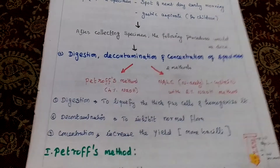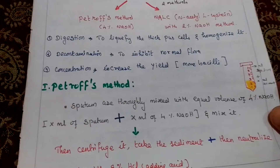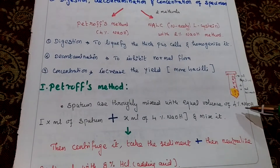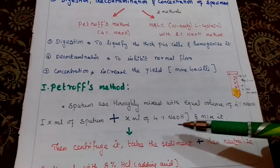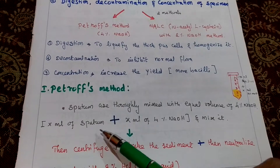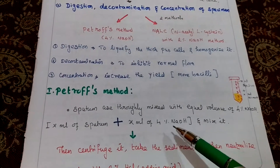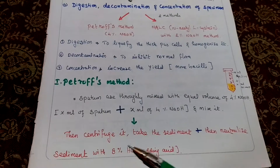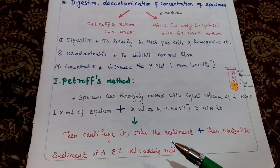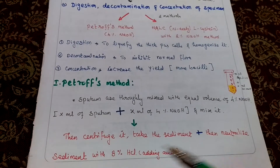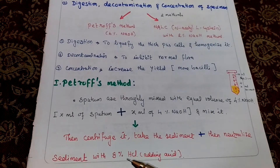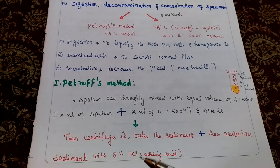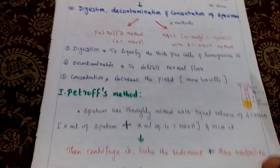First, the Petroff method: sputum is thoroughly mixed with an equal volume of 4% NaOH — X mL of sputum plus X mL of 4% NaOH. After mixing, we centrifuge it, then take the sediment and neutralize it with 8% HCl. We are adding acid, and after that it will be neutralized.